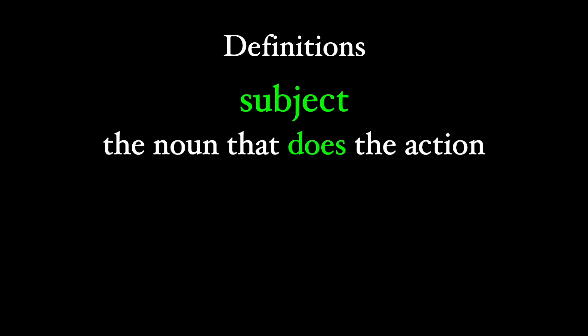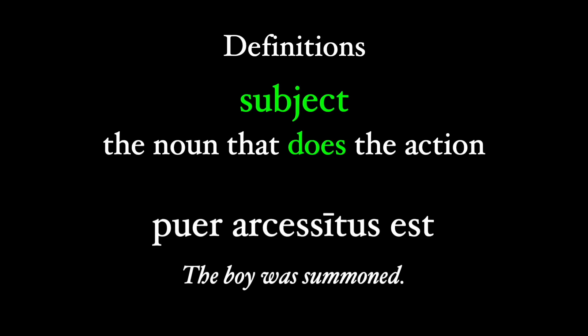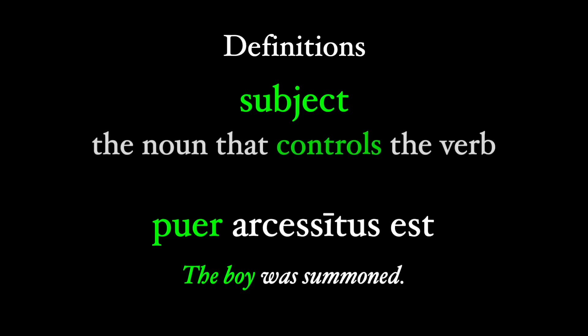But when we get into more complex grammar, especially sentences that involve the passive voice, we run into this problem. The boy was summoned, puer arcessitus est. Here the verb is arcessitus est, and the boy is the subject, but he's no longer doing the action. The subject of a passive verb is, by definition, receiving the action. So instead of saying that the subject is the noun that does the action, let's instead say that the subject controls the verb.